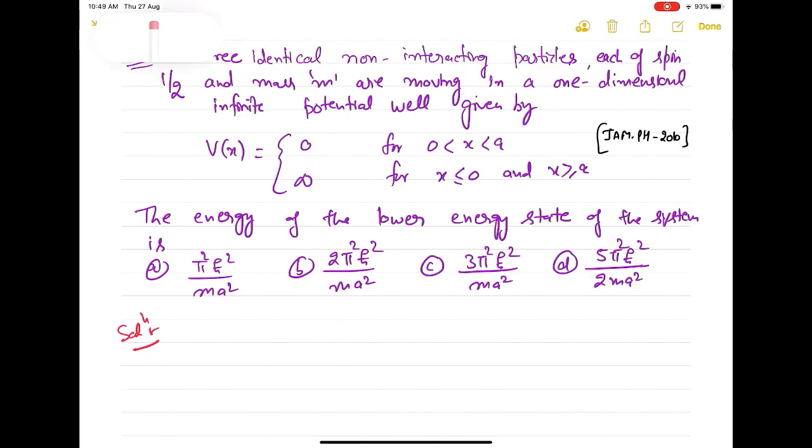Let me start with question two. The question number two says that three identical non-interacting particles, each of spin half and mass m are moving in a one-dimensional infinite square well potential. So infinite potential well one-dimensional I have drawn whose side is given as A. The form of the potential is given to be zero inside the box between x between zero to A, and it is infinite, V(x) is infinite just outside the box. Because this is given in the question, x less than equal to zero, V(x) is infinity and x greater than equal to A, this is again infinity. The energy of the lower energy state of the system is, so we have to find out basically the ground state of the system.